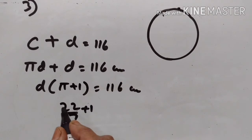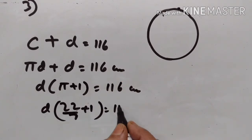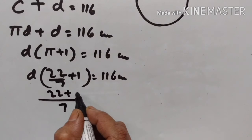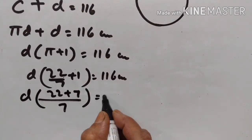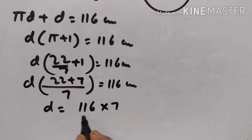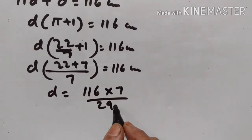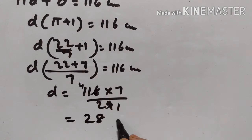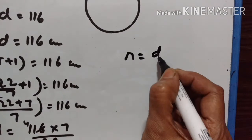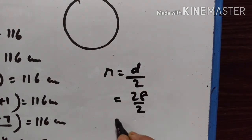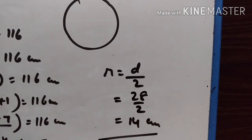Pi is equal to 22/7, so d × (22/7 + 1) = 116 cm. That gives d × (29/7) = 116 cm. So d = 116 × 7/29. 29 × 4 = 116, so diameter is equal to 28 cm. Therefore radius = diameter/2 = 28/2 = 14 cm. So radius is equal to 14 centimeters.